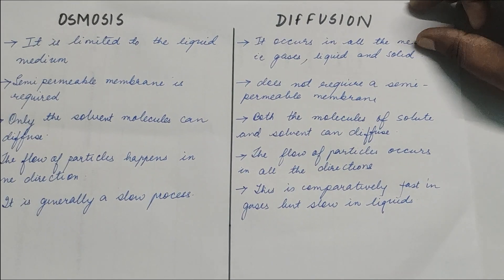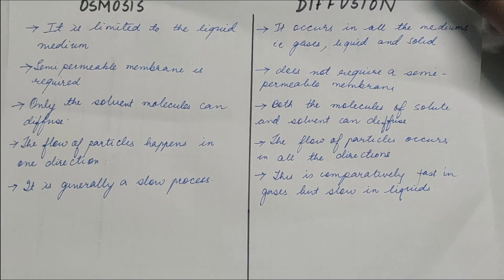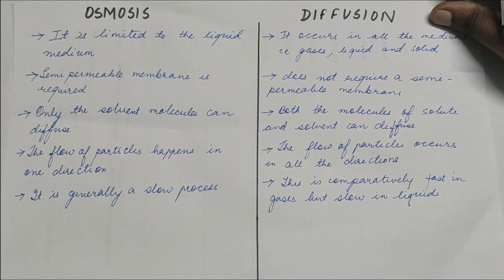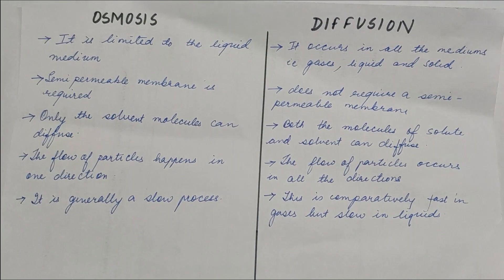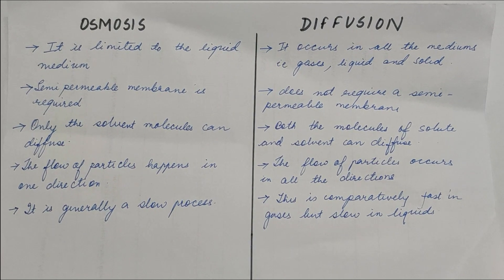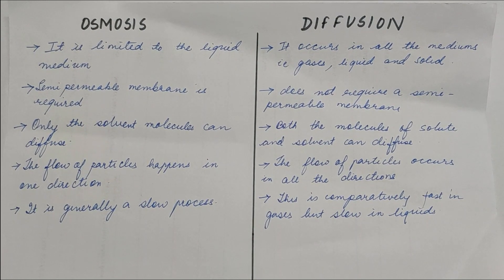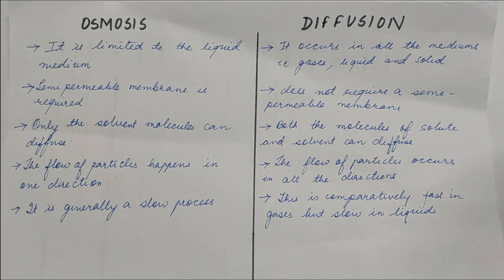That is the difference between osmosis and diffusion. The first difference is that osmosis is limited to the liquid medium. Osmosis only happens in the liquid medium, but diffusion occurs in all the mediums, that is in gases, liquids, and solids.